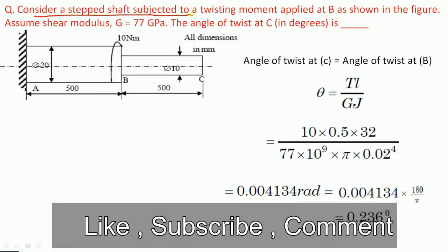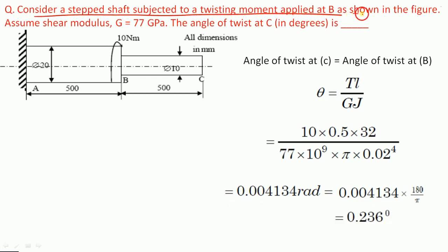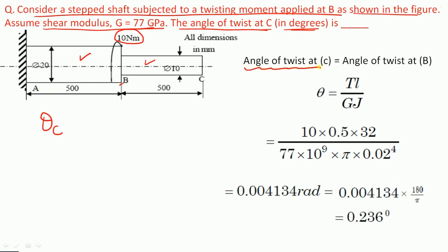Next problem: a stepped shaft is subjected to a twisting moment of 10 Nm applied at B. The shear modulus G is 77 GPa. We need to find the angle of twist at C in degrees. Looking at the diagram, there is no torsional load applied between B and C, so the angle of twist at C equals the angle of twist at B.